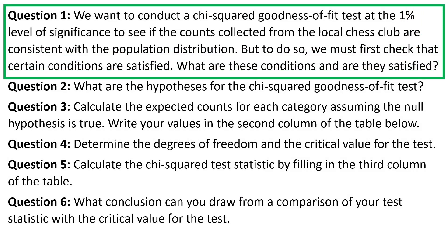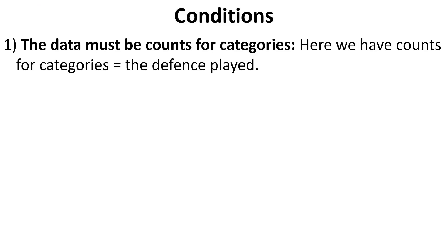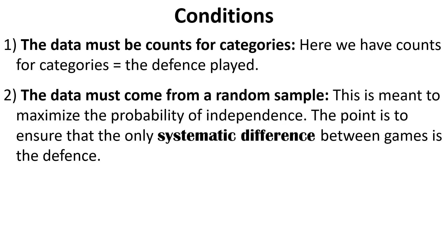Let's work through the questions. To conduct the chi-squared goodness-of-fit test, we need to make sure certain conditions hold. The first condition is that the data must be counts for categories. In this case, we do have counts for categories — we have six categories which are the different defenses played, and for each category we have some count. So clearly this condition is satisfied.